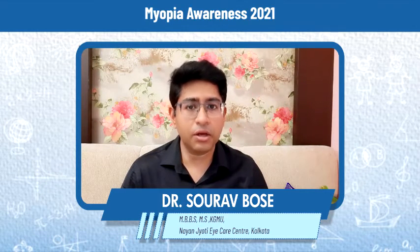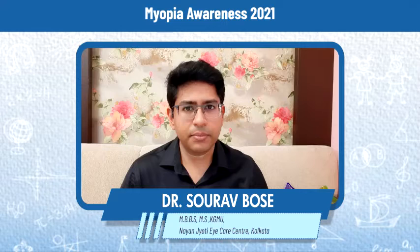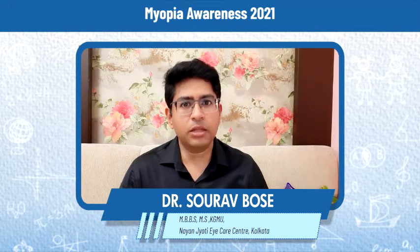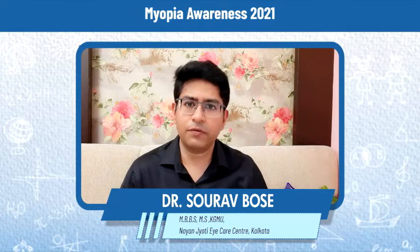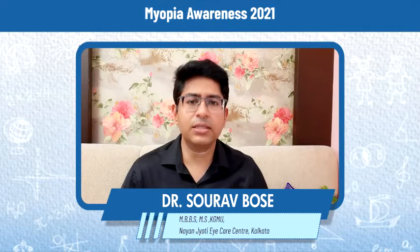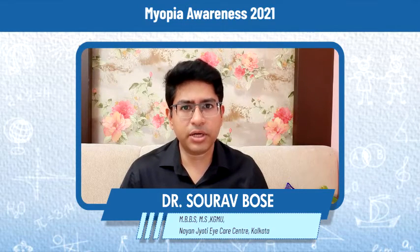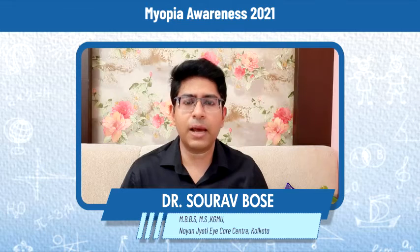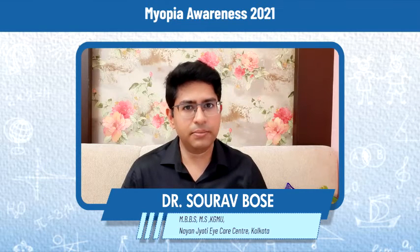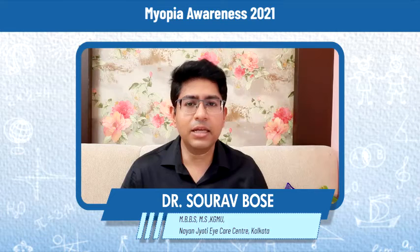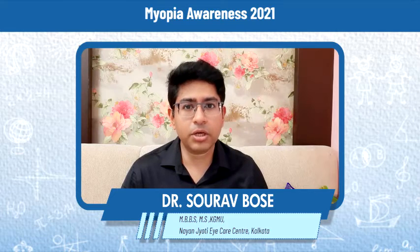Certain conditions like keratoconus, where there is an increased corneal curvature, lead to myopia. The modifiable risk factors are the most important. First and foremost is holding a book or a readable object like a mobile or a laptop very near to the eye — it causes strain in the eye and leads to the formation and progression of myopia.